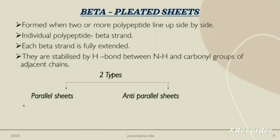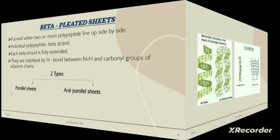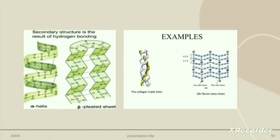The beta pleated sheets are formed when two or more polypeptides line up side by side. The individual polypeptide is called a beta strand. Each beta strand is fully extended. These are stabilized by H-bonds between NH and carbonyl groups of adjacent chains. There are two types of beta pleated sheets: parallel sheets and anti-parallel sheets. These are the examples of secondary structure of protein.